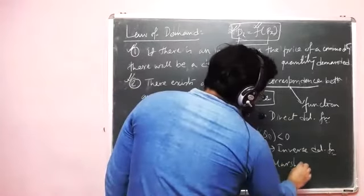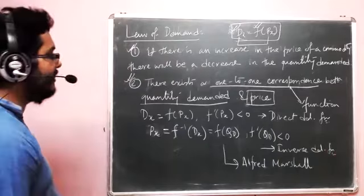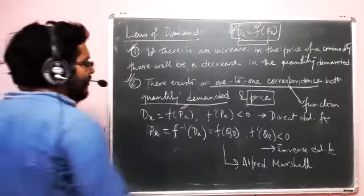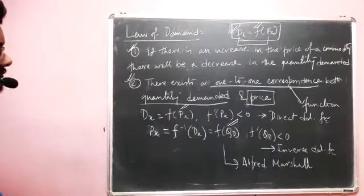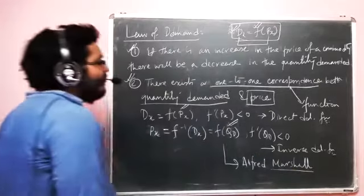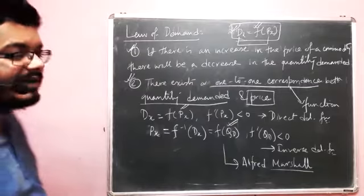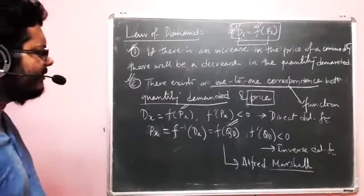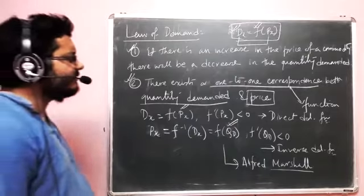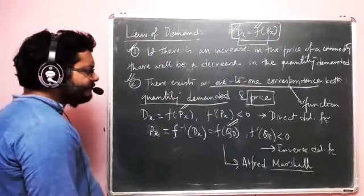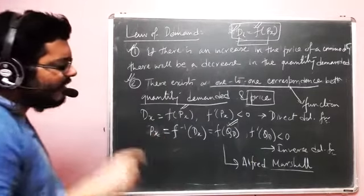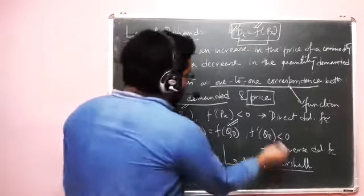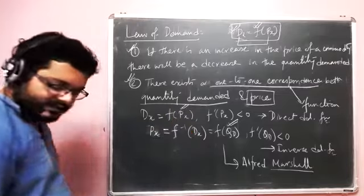Later when we construct Marshallian demand functions, unlike now where demand functions are given, you will observe that while we draw the demand function we draw it in the inverse form, but when writing it analytically we solve it so that quantity is a function of price anyway.